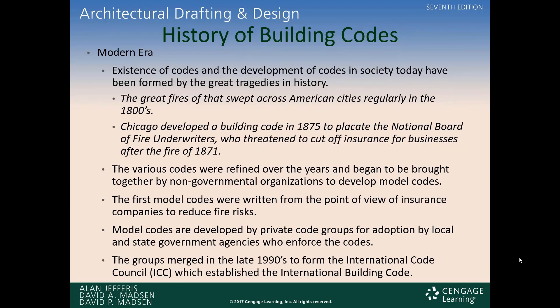Today, our codes have mostly been put into force by insurance companies. Back in the 1800s, if you remember the great fires that swept through the city of Chicago and other places, Chicago developed a building code in 1875 to placate the National Board of Fire Underwriters — which basically is insurance. Insurance today has a big influence on what codes come into place, because if there is a tragedy, insurance is the one that has to pay for it, so they are very involved in the code setups.